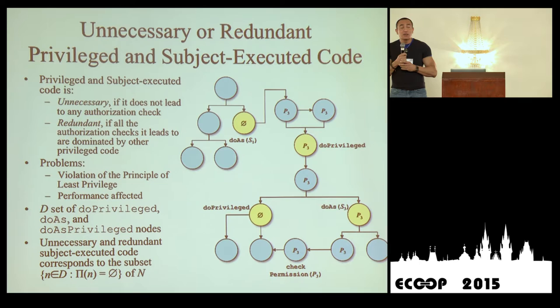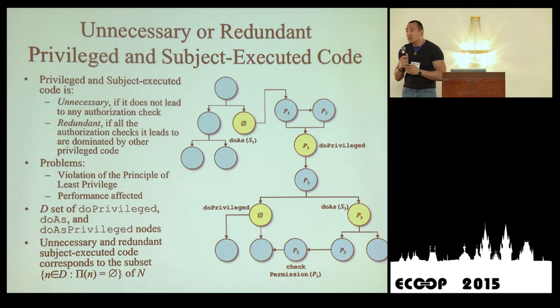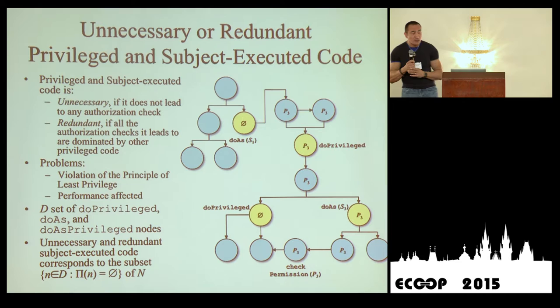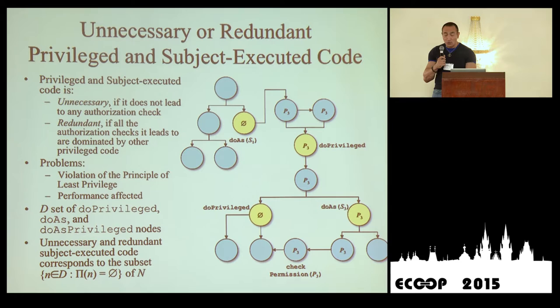One thing we found during this work was that some code was written poorly — there were calls made to doAs or doAsPrivilege that didn't require any permission. So why did the developers bother to even call those APIs? It's a security violation. As soon as we detected a call to one of these APIs labeled with the empty set, we flagged it as a redundant call. In this case, the code had to be rewritten and the call to doAs eliminated.